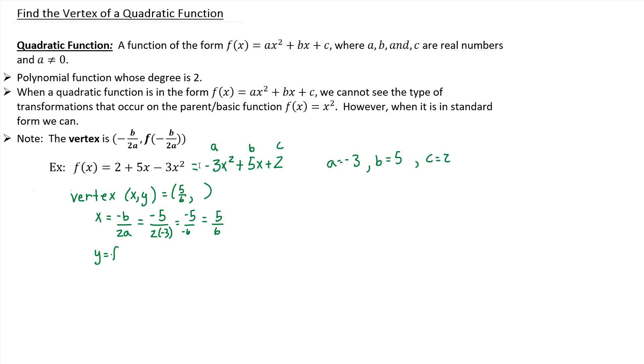In this case, your function evaluated at the opposite of b over 2a. But we know that was 5 sixths. So it's just f evaluated at that 5 sixths, that x value you just determined. So don't overcomplicate it. It's just evaluated at the value you just got for x. That'll give you your y.